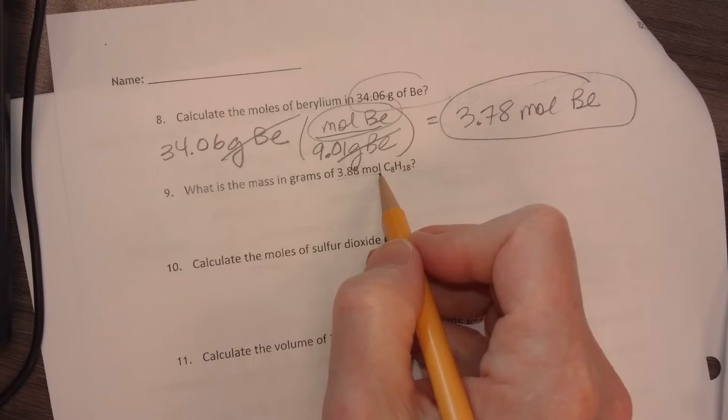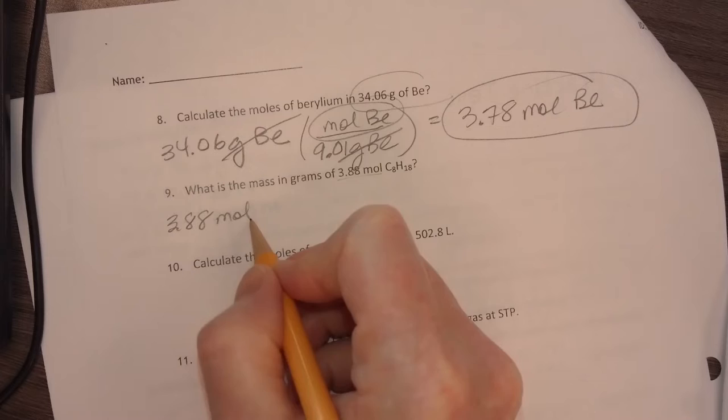The next one is what is the mass in grams of 3.88 moles of octane? Okay, I have 3.88 moles of octane. Now, octane has 8 carbons. I'm going to do that up here.